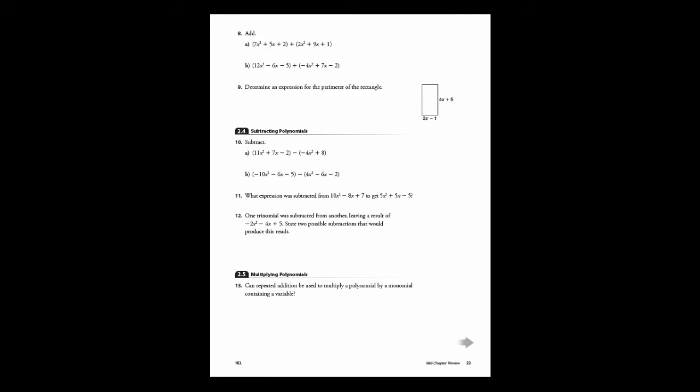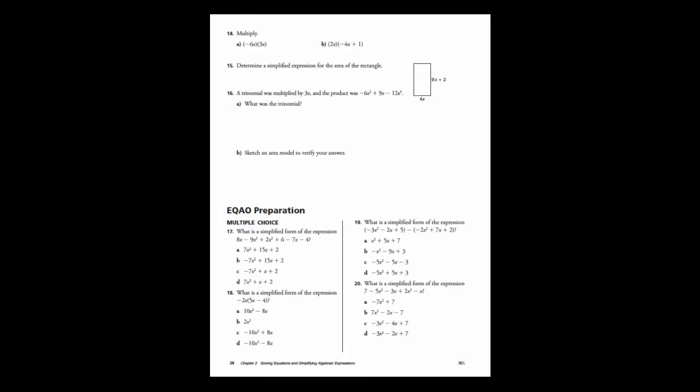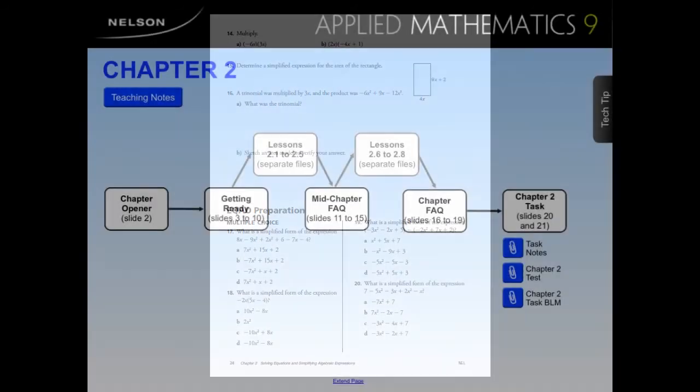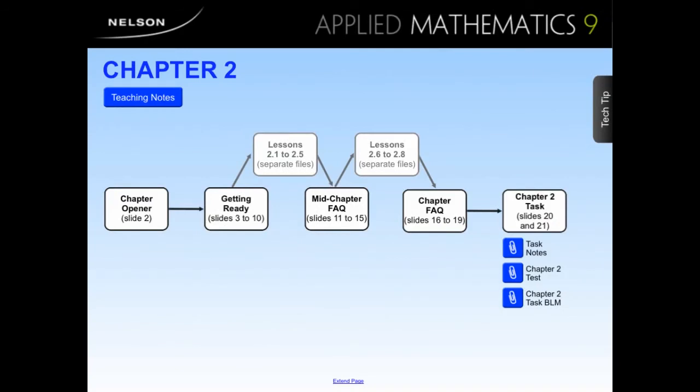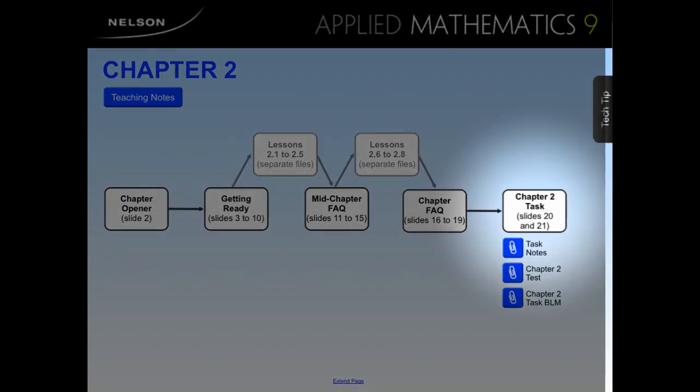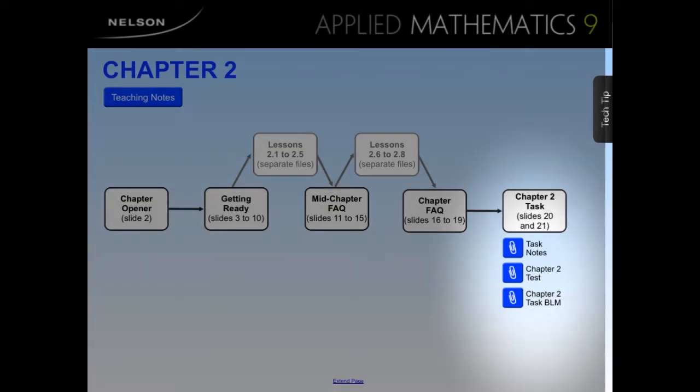In addition to the FAQs, mid-chapter and chapter reviews are available in the student workbook. Review questions for each lesson are provided, as well as additional EQAO-style questions in multiple-choice and other response formats. Other resources available for each chapter include a chapter task along with accompanying teaching notes and Blackline Masters, and a chapter test. Each of these are accessible from the chapter organizer slide by clicking on the links.